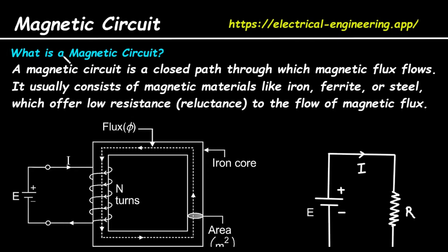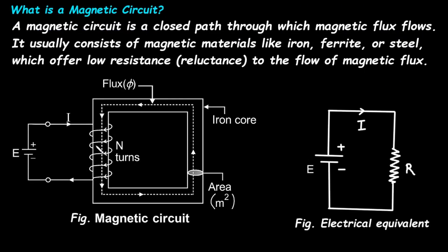So first of all, what is a magnetic circuit? A magnetic circuit is a closed path through which magnetic flux flows. Here we can see this is the magnetic circuit — a closed path made by this iron core which is in square shape. And here this is the flux phi which is flowing through this iron core. That is why it is called a magnetic circuit.